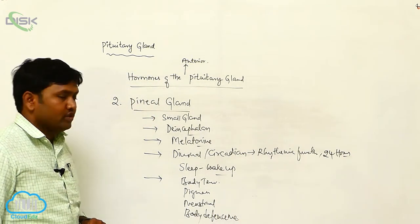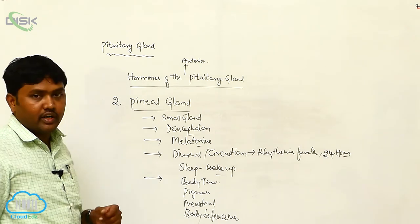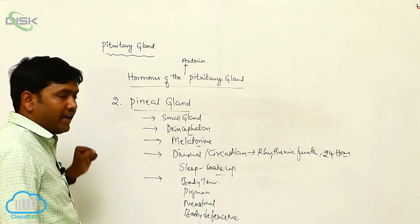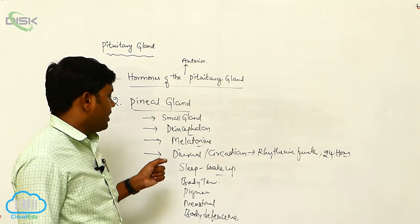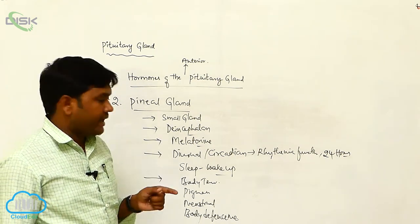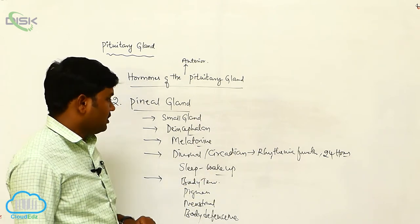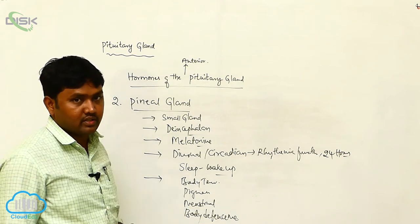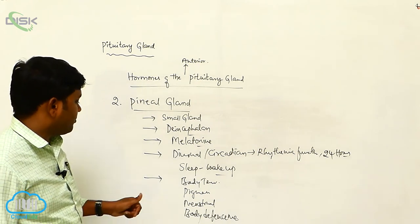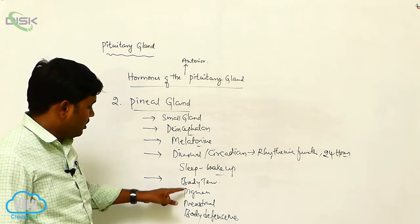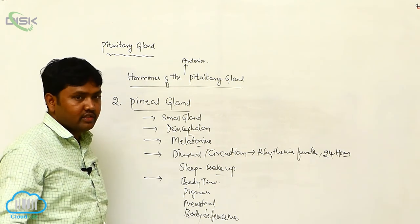To summarize, the pineal gland is a small gland located near the diencephalon. It releases the hormone melatonin, which functions over 24 hours, governing diurnal and circadian rhythmic functions including sleep and wake-up functions. It also induces metabolic functions such as body temperature, pigmentation, menstrual cycles, and defense mechanisms.